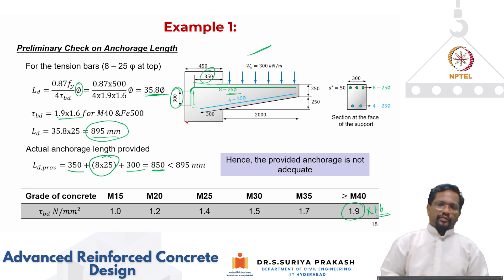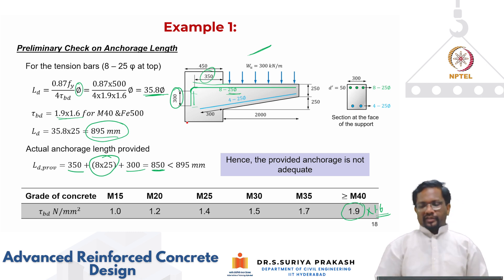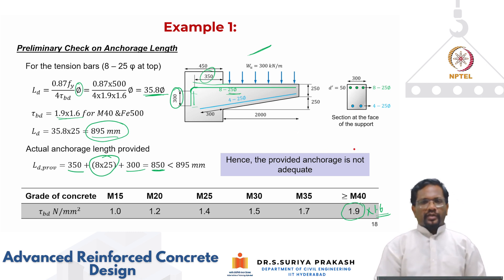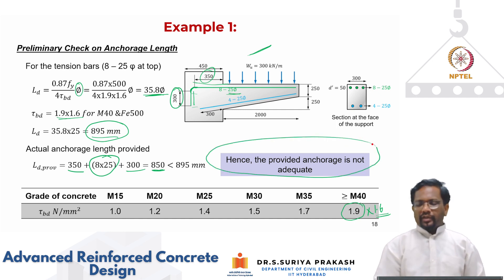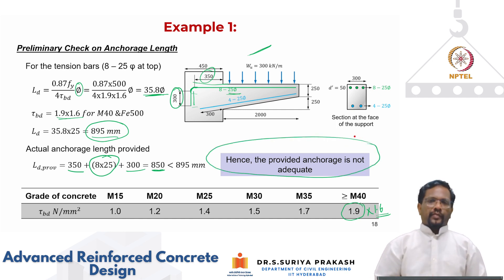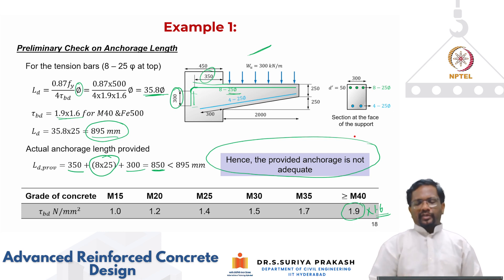Instead of 300 mm, the bar extension may need to be increased by about 50 mm to meet the requirement. The conclusion is that on the tension side, the provided anchorage is not adequate, and we need to check the compression steel similarly.